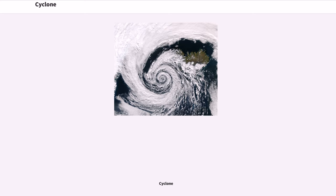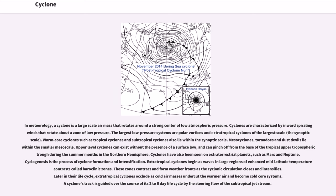Cyclone. In meteorology, a cyclone is a large-scale air mass that rotates around a strong center of low atmospheric pressure. Cyclones are characterized by inward spiraling winds that rotate about a zone of low pressure. The largest low-pressure systems are polar vortices and extratropical cyclones at the largest scale, the synoptic scale. Warm core cyclones such as tropical cyclones and subtropical cyclones also lie within the synoptic scale.